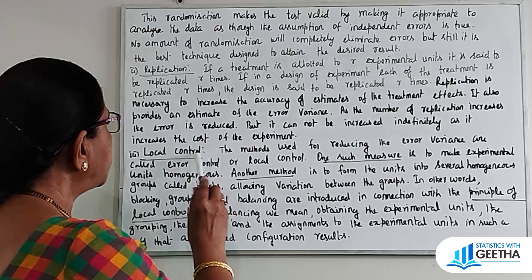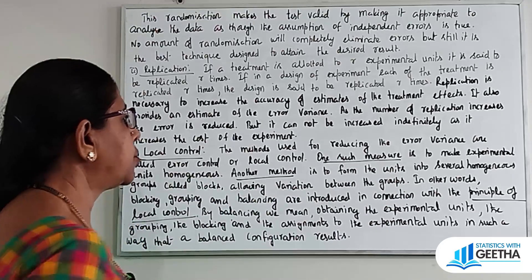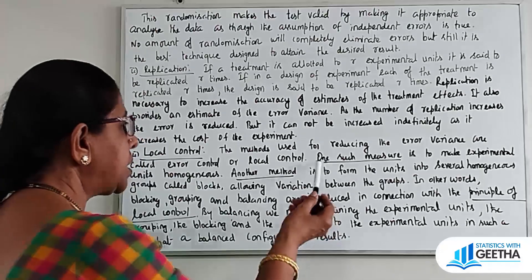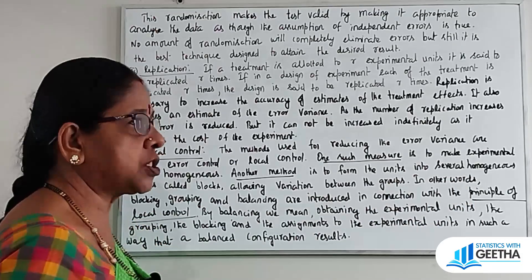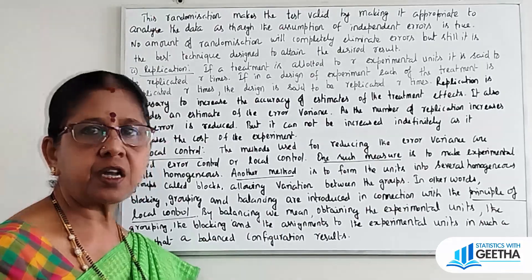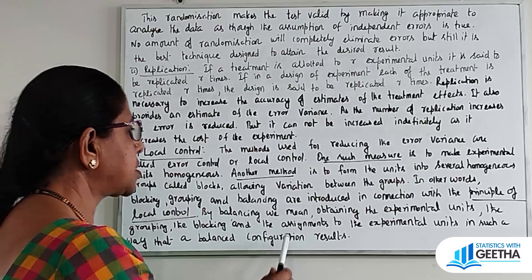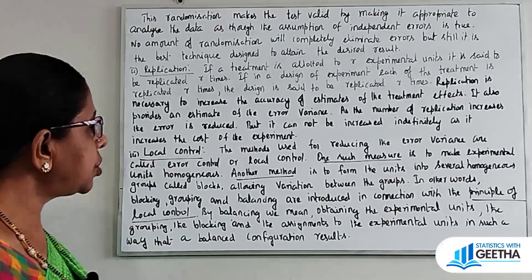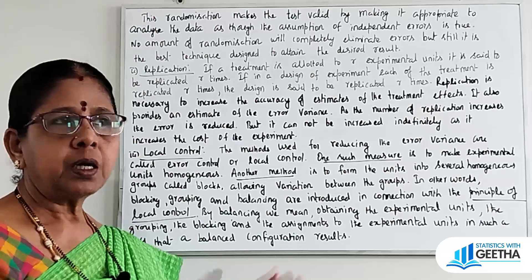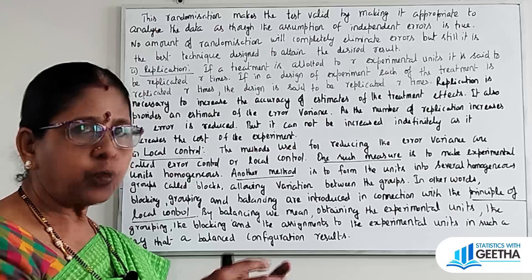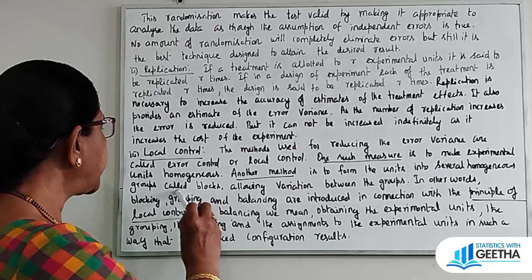Local control. The methods used for reducing the error variance are called error control or local control. One such measure is to make experimental units homogenous. Another measure is to form the units into several homogenous groups called blocks.